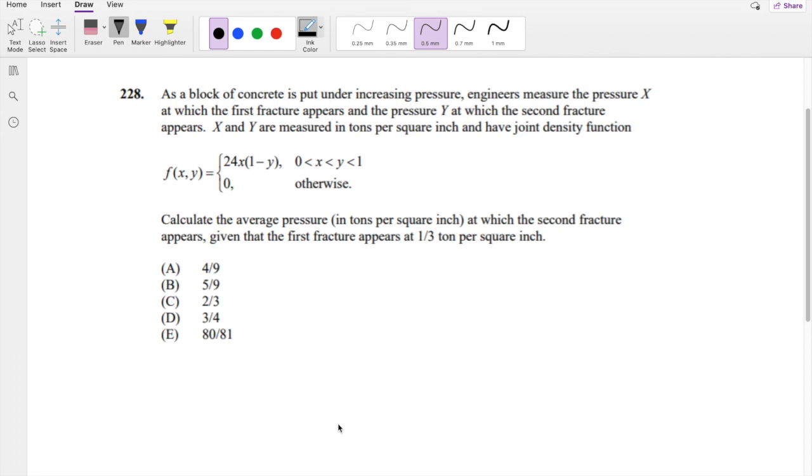Assuming you're written in, let's just dive right in. So basically this question is asking, calculate the expected average pressure at which the second failure appears, so the second failure is our Y variable, given that X is equal to one third.